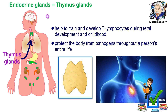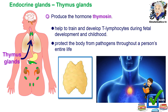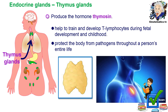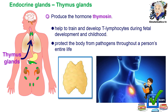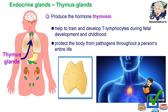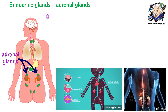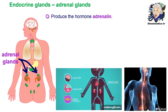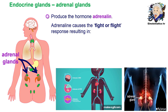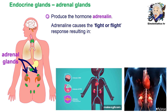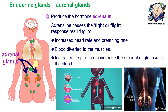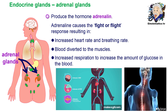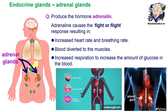The next type of gland is the thymus gland, which produces the hormone thymosine. Thymosine protects the body from pathogens throughout a person's entire life because it helps to train and develop T-lymphocytes during fetal development and childhood. Another important endocrine gland is the adrenal glands, which produce the hormone adrenaline. Adrenaline causes the fight-or-flight response, especially during emergencies, resulting in increased heart rate and breathing rate, blood diverted to the muscles, and increased respiration to raise glucose levels in the blood for immediate action in life-endangering situations.